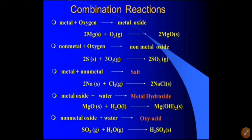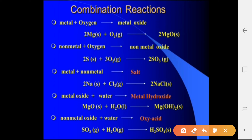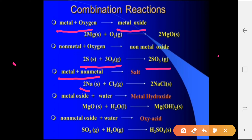Here are a few more examples of combination reactions. When a metal and oxygen react, a metal oxide is formed: 2Mg + O₂ → 2MgO, magnesium oxide. Non-metals also react with oxygen — for example, when sulfur burns in the presence of oxygen, an oxide of sulfur is obtained. Metal and non-metal also react: sodium, a very soft highly reactive metal stored in kerosene, reacts with chlorine gas to form NaCl — sodium chloride.